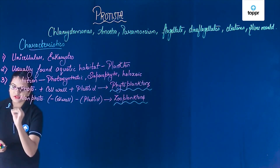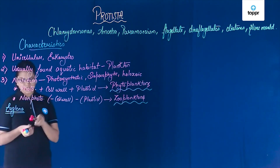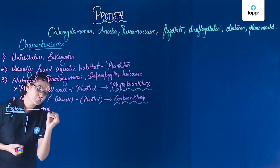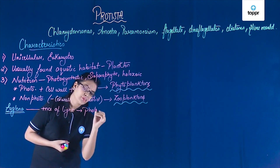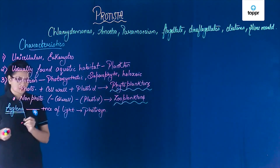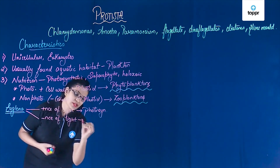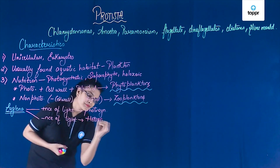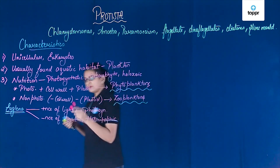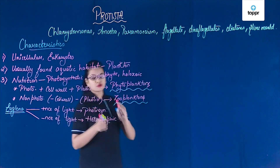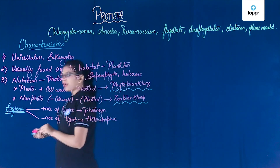A special example here is Euglena. In the presence of light, Euglena becomes photosynthetic in nature. But in the absence of light, it will become holozoic, acting as heterotrophic. So Euglena is a very special example which can act as both autotrophic and heterotrophic depending upon the presence or absence of light.